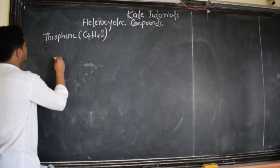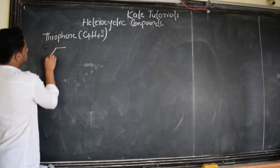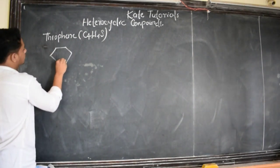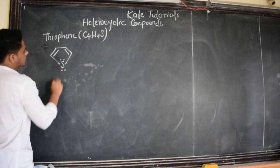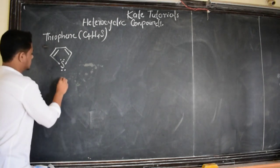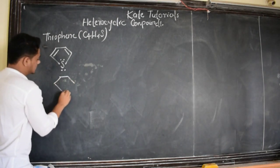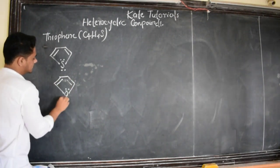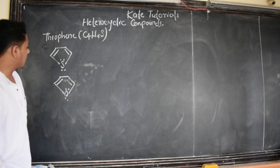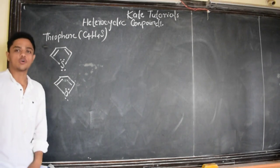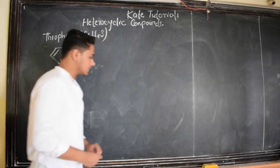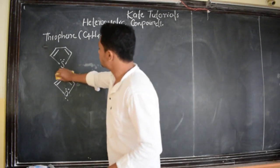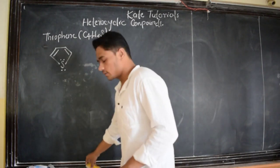The structure for thiophene is the same as furan but with sulfur. The structure of furan, their preparations, and their chemical properties we have already discussed. This is furan whereas this is thiophene. In this class we are also going to discuss its structure and orbital picture of thiophene.